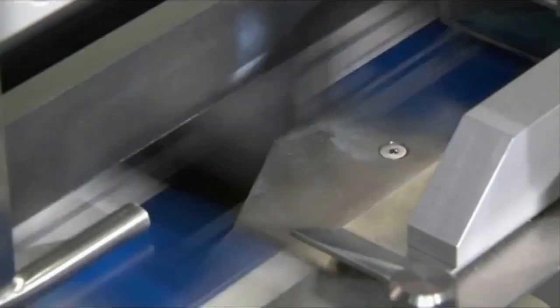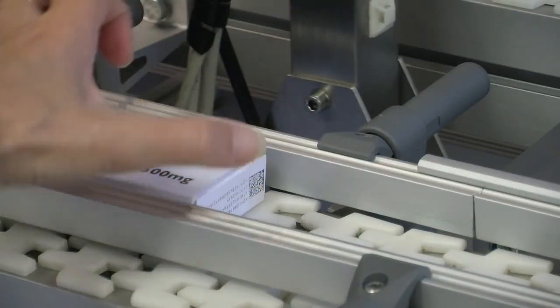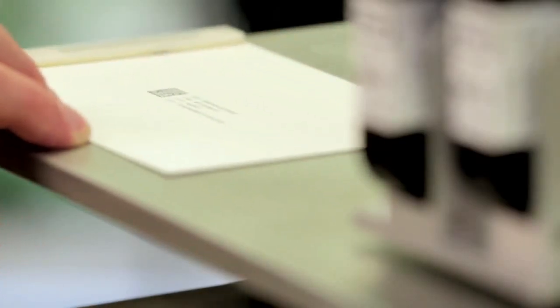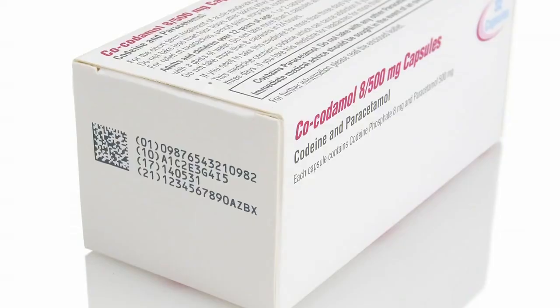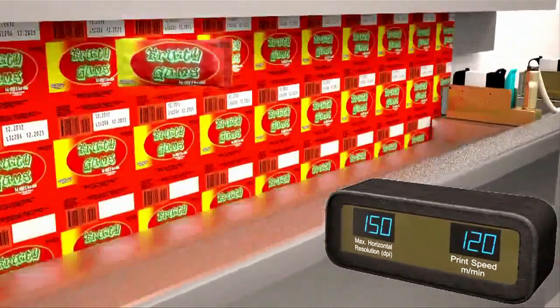So you're looking at 50-60% of the market being white boxes printing data matrix codes onto them, and we didn't have a product to do that until we invested in the TIJ technology. What we've seen over time with HP TIJ is other markets that can use this technology.